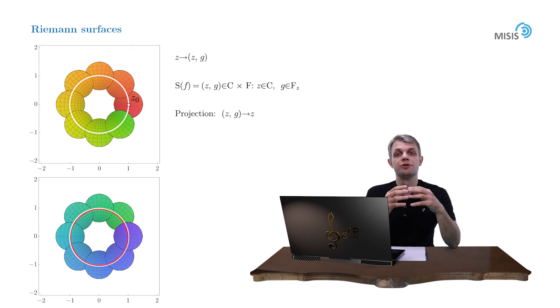This allows to define a concept of analyticity on a Riemann surface. And it turns out that the globally analytic function on the complex plane is analytic in an ordinary sense on a Riemann surface.